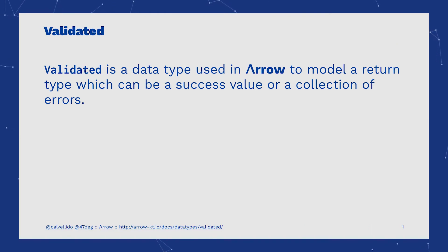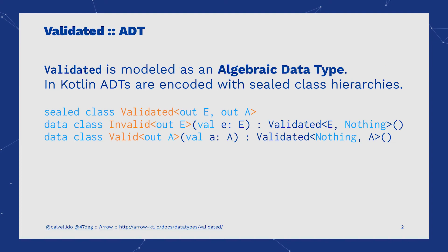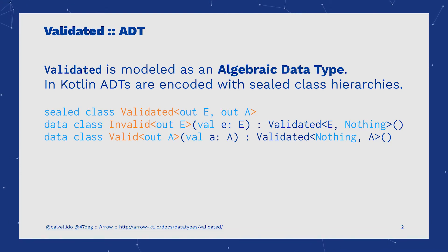Validated is a data type that we use to model when a function may return two kinds of values, which could be considered valid or invalid. As with Either, it can be one or the other. Validated is frequently modeled as an algebraic data type in the same way as we saw in Option and Either. Validated has two cases.